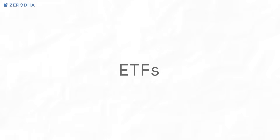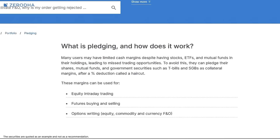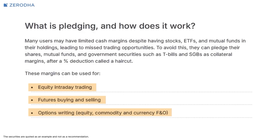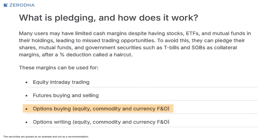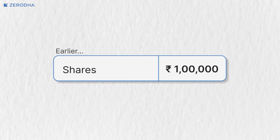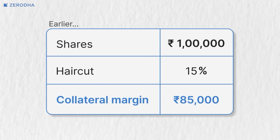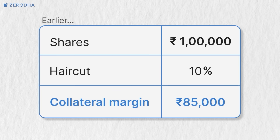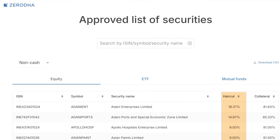Instead of holding cash, many traders prefer to invest money in stocks, bonds, ETFs, and mutual funds, and pledge these holdings for margin to trade in the F&O segment. However, previously this margin could only be used for selling options and trading futures; for buying options, one needed to keep a cash balance. We are now allowing collateral margin to be used for buying options as well. We've also reduced the haircut on pledged securities, meaning you'll receive higher collateral margins. For example, if you pledged shares worth 1 lakh rupees with a 15% haircut, you'd get 85,000 rupees. With the haircut reduced to 10%, you now get 90,000 rupees instead. Check the list of all approved securities and their respective haircuts via the link in the description.